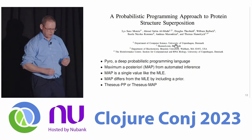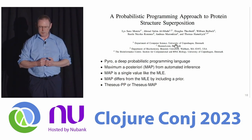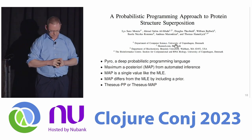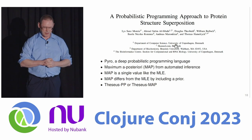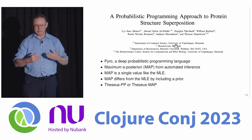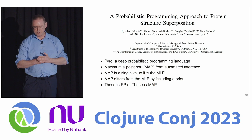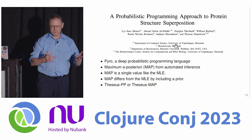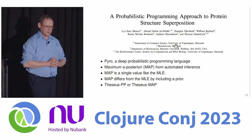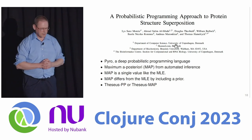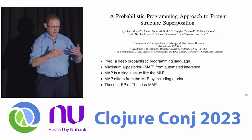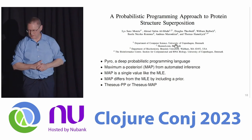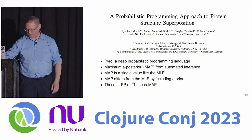A group in Denmark developed a probabilistic programming approach to this problem and used the program Pyro. A probabilistic programming language is a domain-specific language in which you can describe a statistical model without having to worry about describing the details of the inference machinery, allowing you to be more productive in statistical modeling and develop more sophisticated models. They called this approach Theseus-PP or Theseus-MAP. The MAP is a single value returned by this process — you can think of it as the peak in the posterior distribution from Bayesian statistics, similar to the prior maximum likelihood method that returns a single point value.